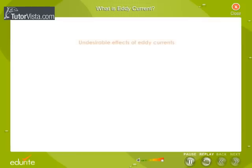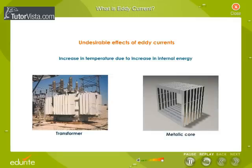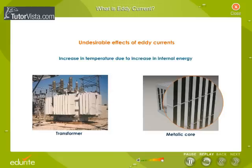In some cases, the eddy currents may produce undesirable effects. For example, they increase the internal energy and therefore can increase the temperature of the material. For this reason, devices like transformers, which are constantly subjected to changing magnetic fields, are often laminated — their metallic core is divided into thin sheets. Each of these sheets is insulated from one another.